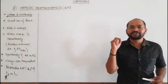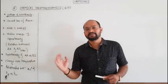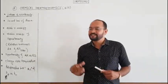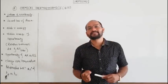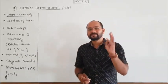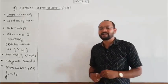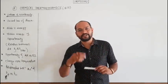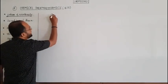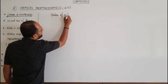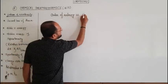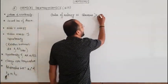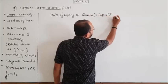Entropy is the measure of randomness or disorder in the system. Greater the disorder in the system, greater is the entropy. The order of entropy is: gaseous state has more disorder — that is more entropy — than the liquid, and liquid has greater entropy than the solid.